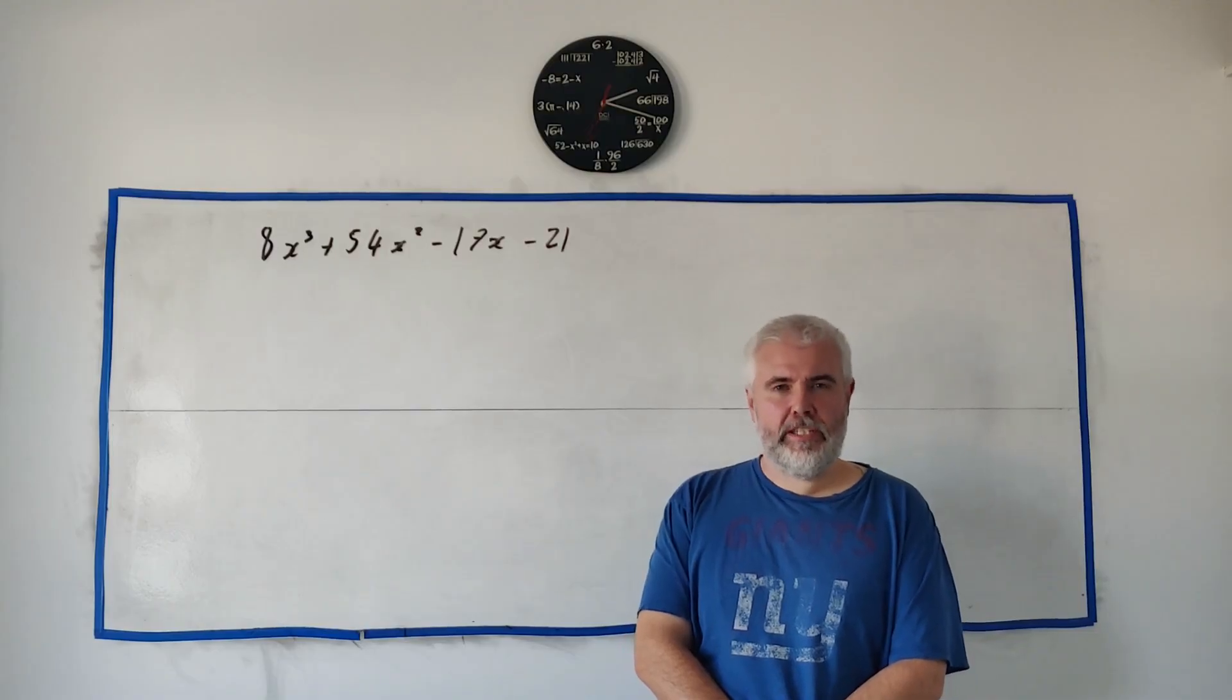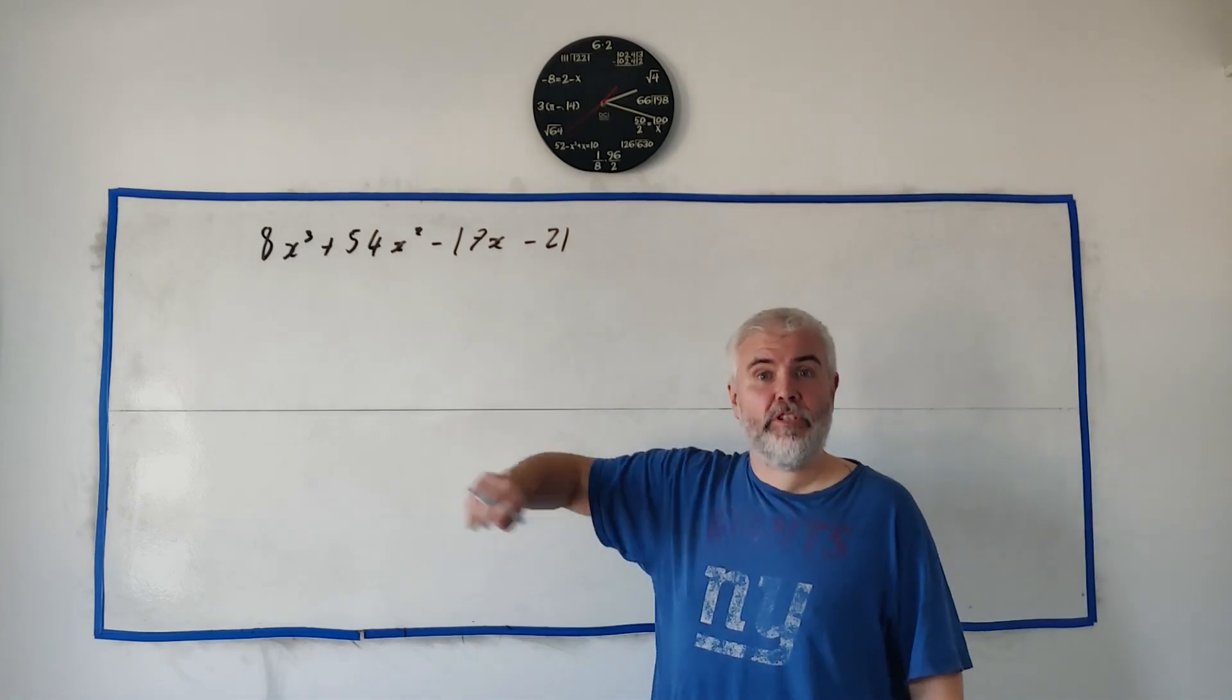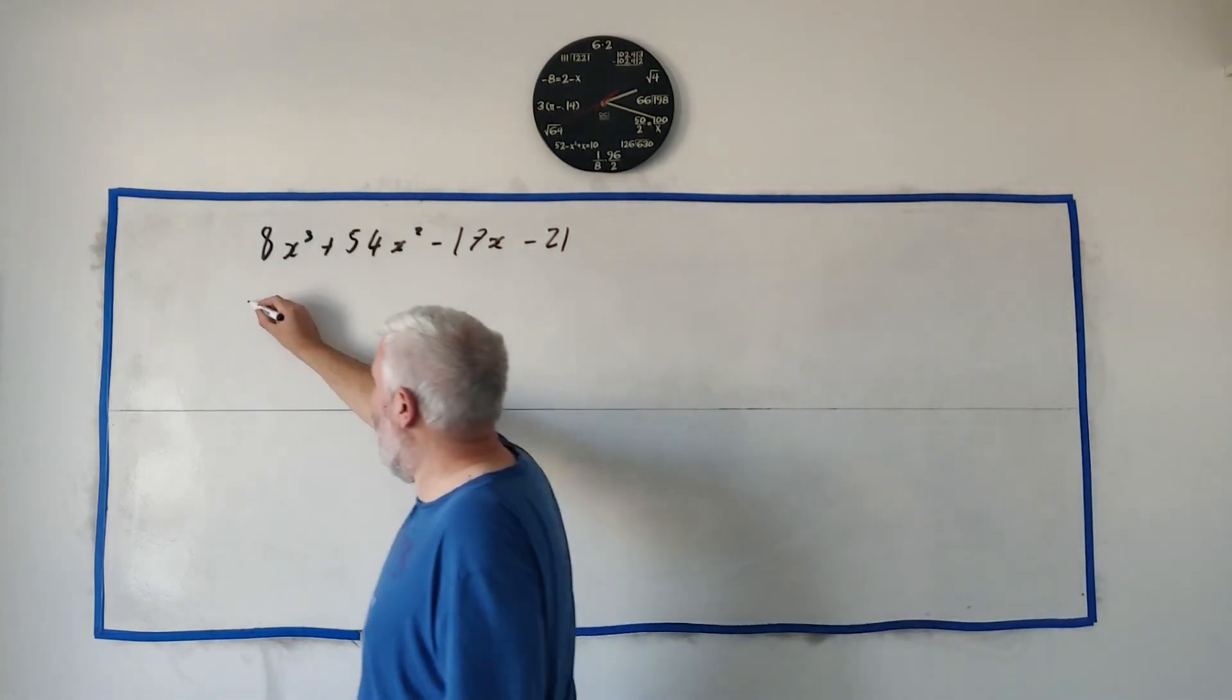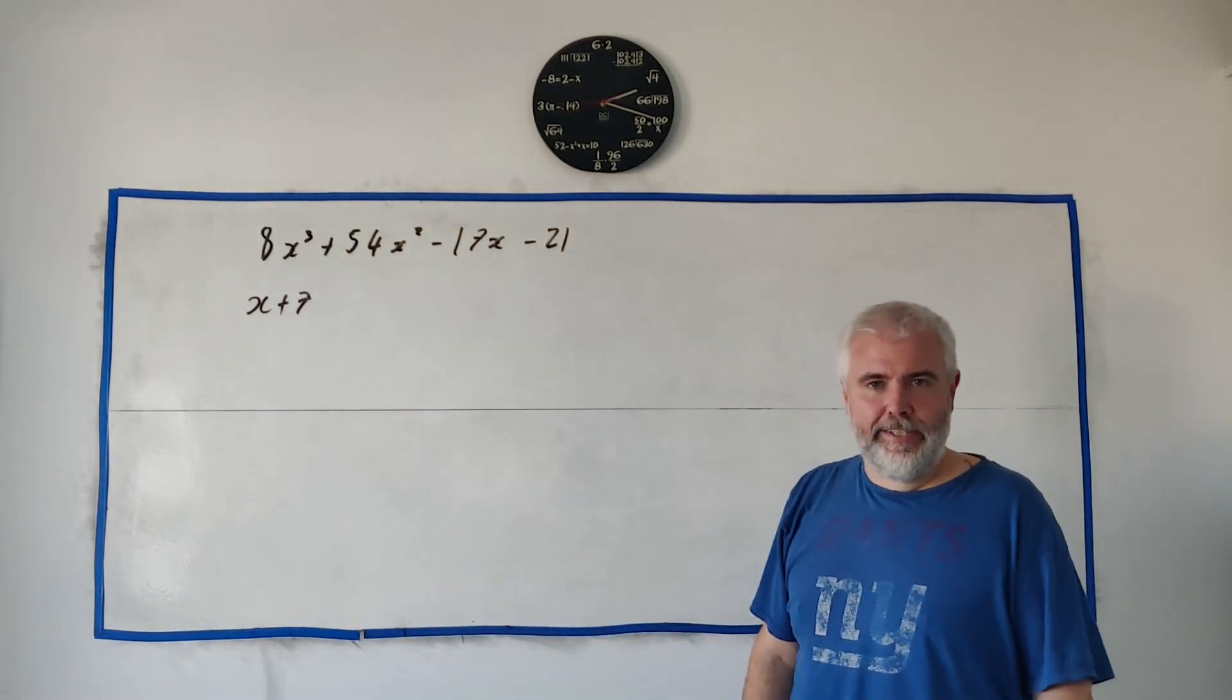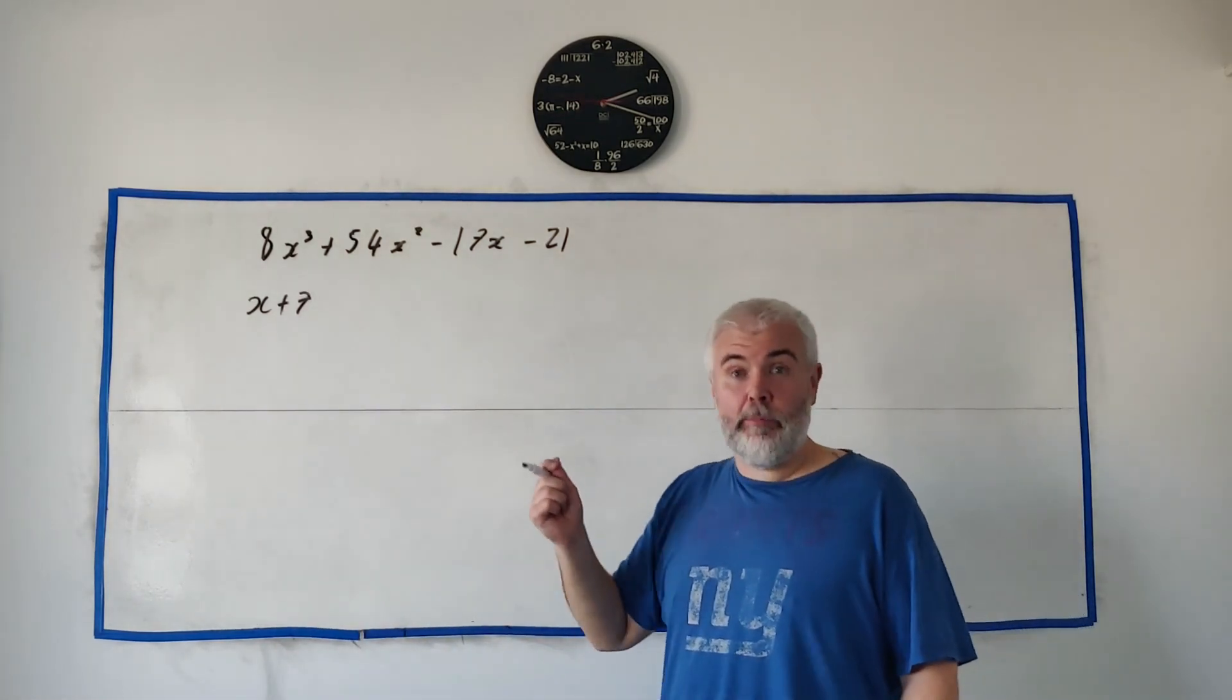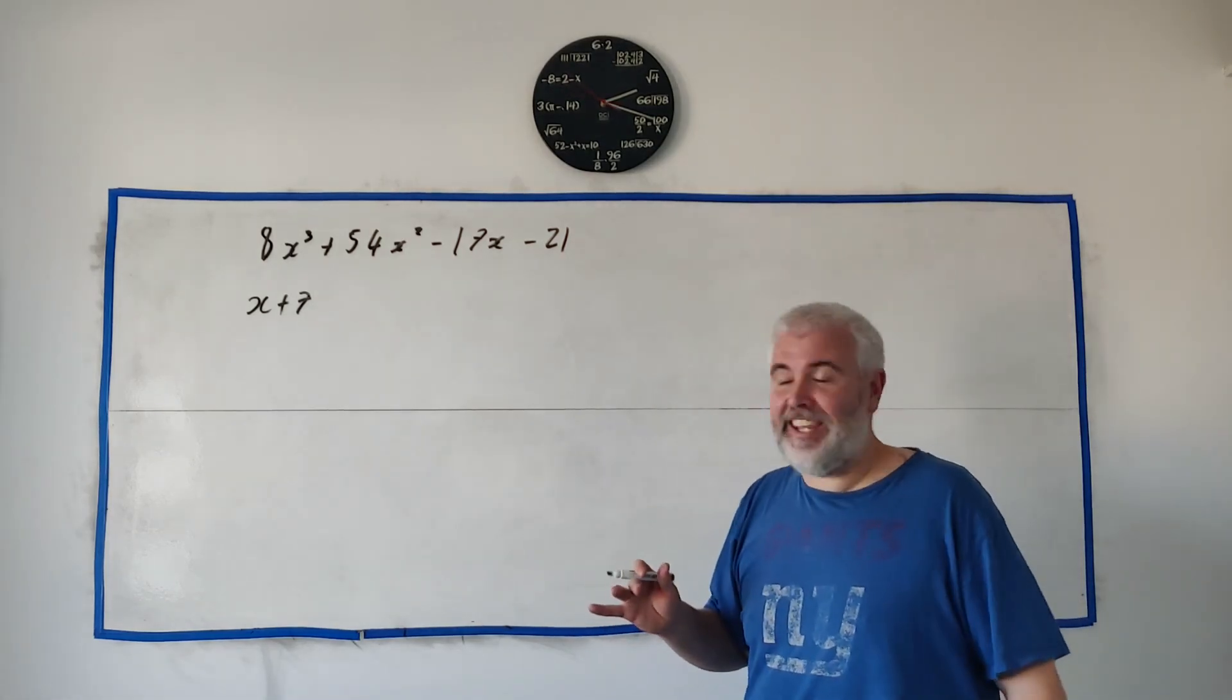For part A question 7 they start us off by asking us to show that x plus 7 is a factor of this. Now we can do that two ways the second way to do that is what I'm going to do in part B anyway so let me show you the other way in part A.